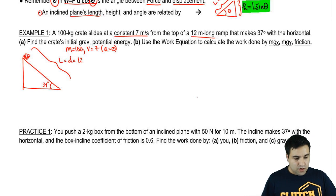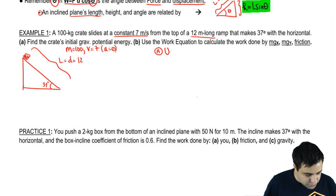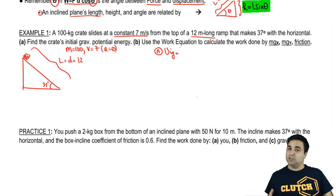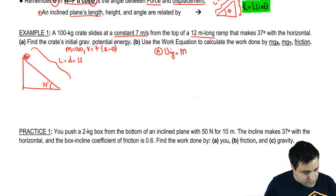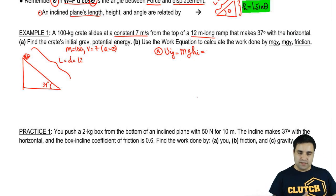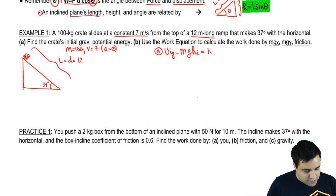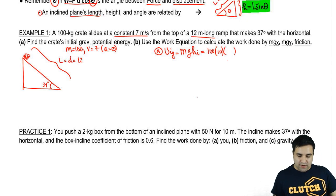So first thing I want to know is what is the crate's initial potential energy? Potential initial is gravitational potential initial, because there's no spring. It's just MGH initial. The mass is 100, gravity we're going to use 10 just to make it simpler. And my original height is, I don't have it. I don't have the original height.